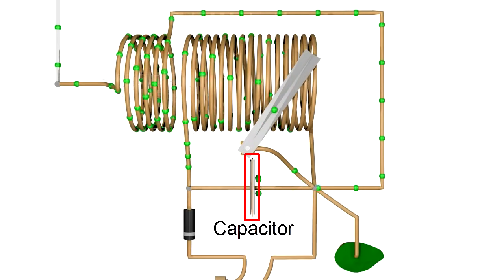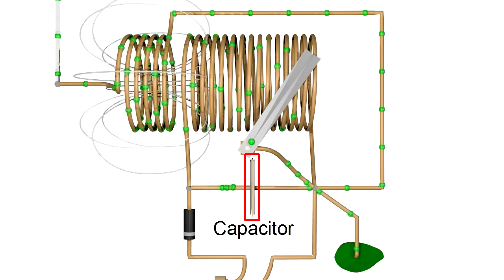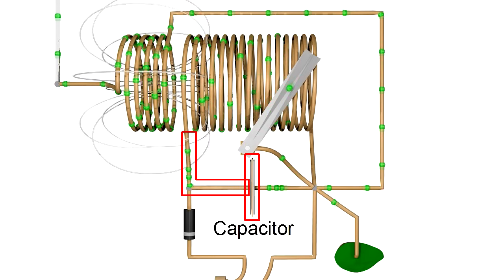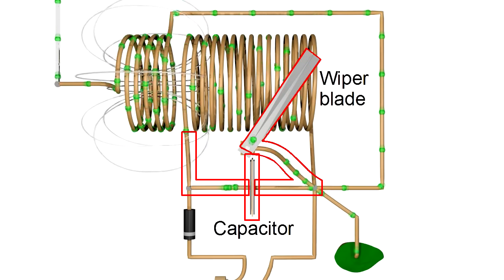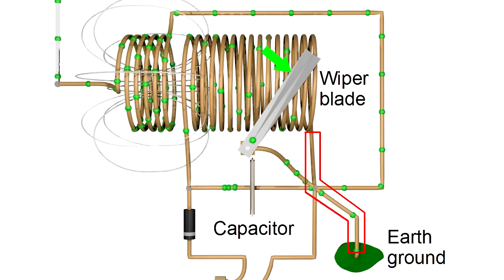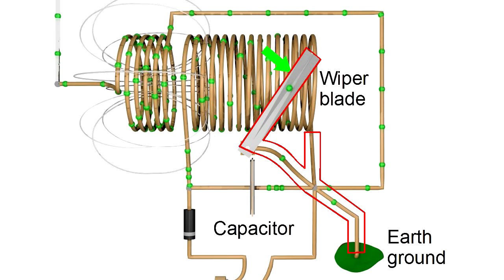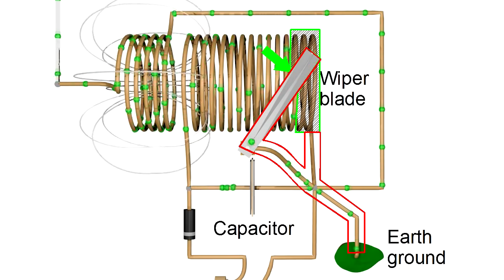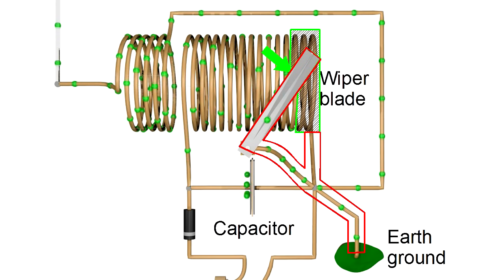In parallel with the second coil is a capacitor. One plate of the capacitor is connected to one end of the coil. The other plate of the capacitor is connected to one end of a wiper blade, which is then touching the coil somewhere. The other end of the coil is connected to earth ground, but since the wiper blade is also connected to earth ground, that means that that section of the coil has no voltage, no current or electron flow.